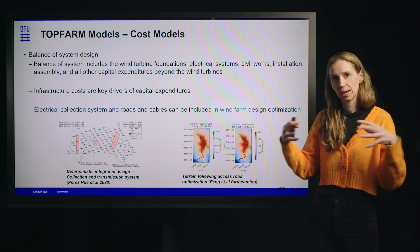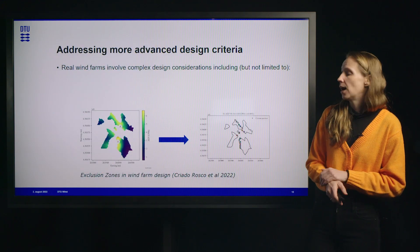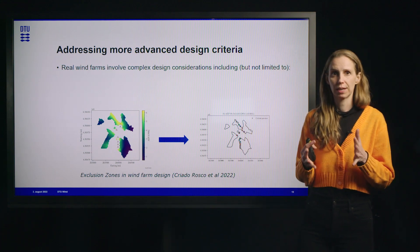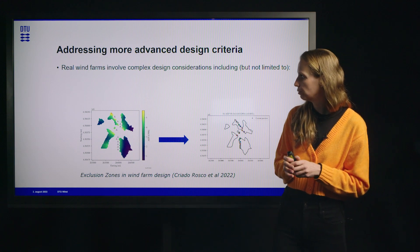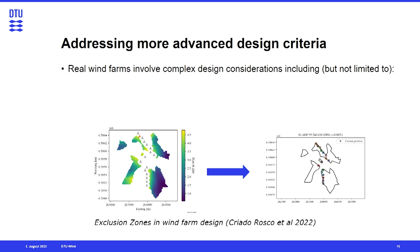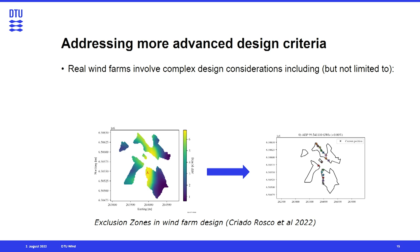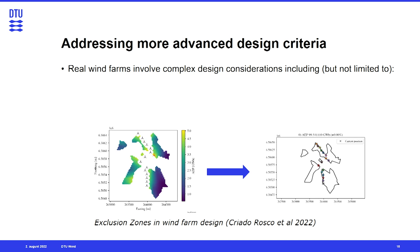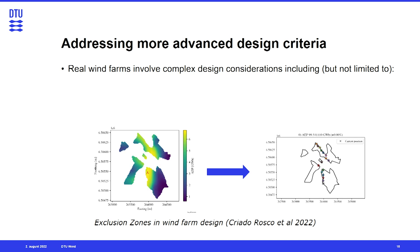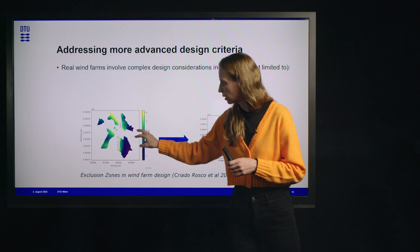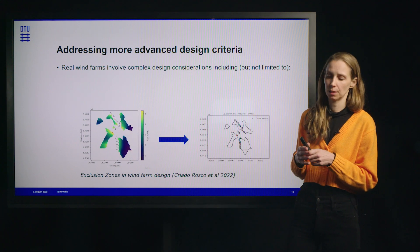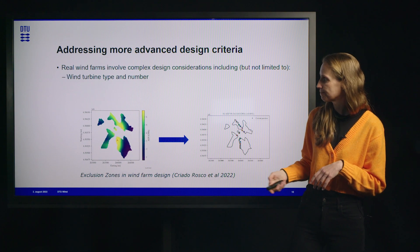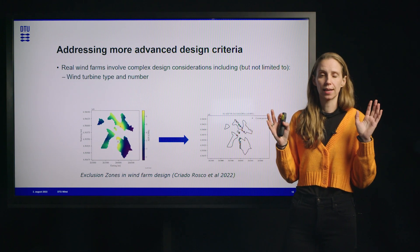These are examples of the types of models we use for the cost side of the LCOE equation. We couple those together with the energy side to get overall LCOE. We also address more advanced design criteria, such as exclusion zones — areas where turbines cannot be placed due to land ownership, environmental considerations, archeological factors, or other reasons — which add complexity to the design problem.